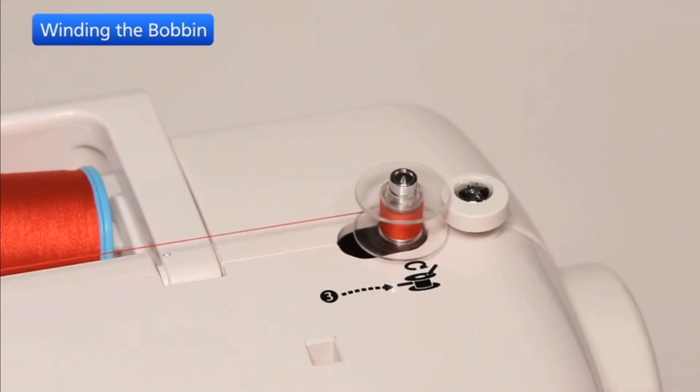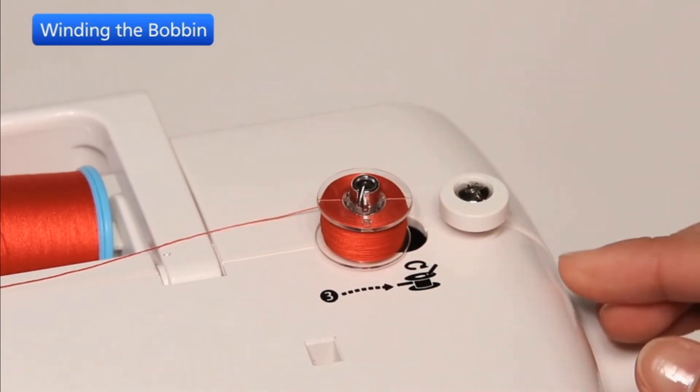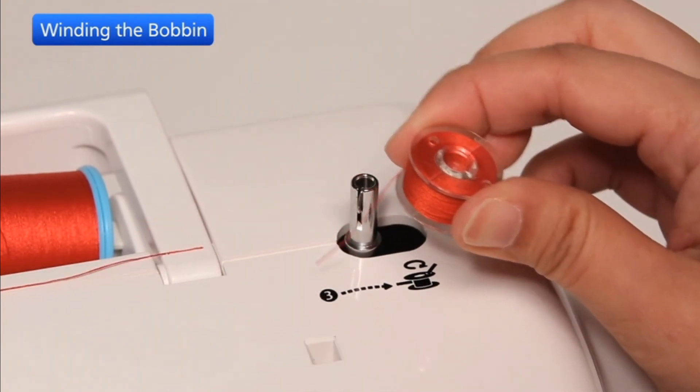Start the machine. When the bobbin is fully wound, it will stop spinning automatically. Then stop the machine. Return the bobbin winder to its original position by moving the spindle to the left. Remove the bobbin. Cut the thread as shown.